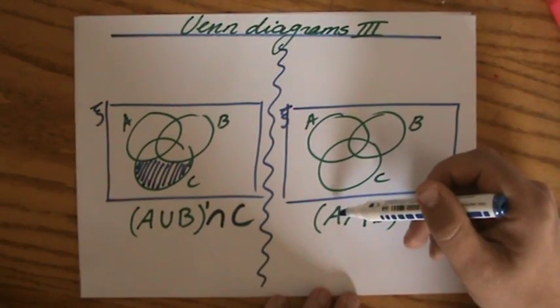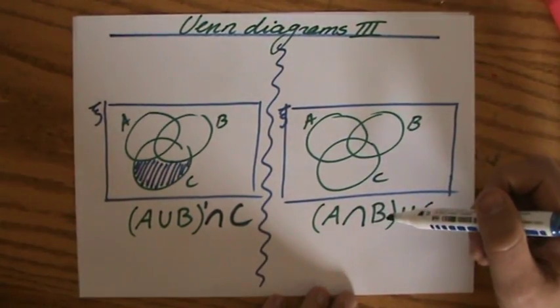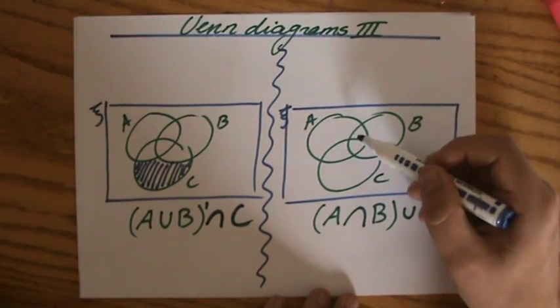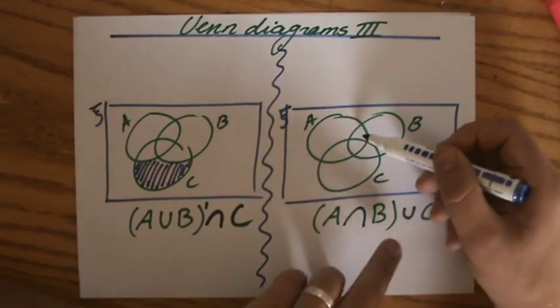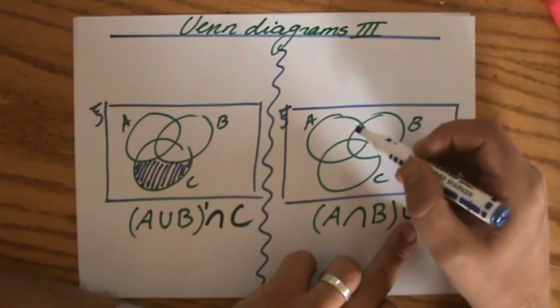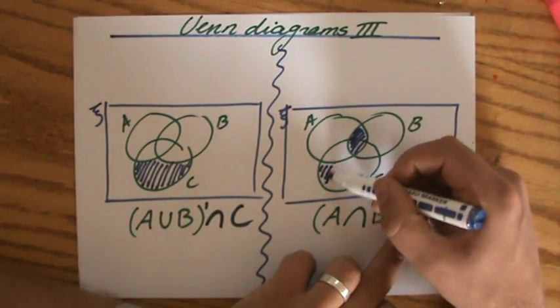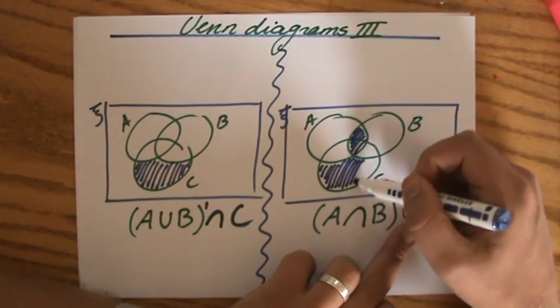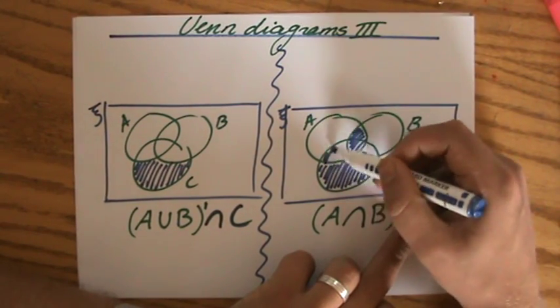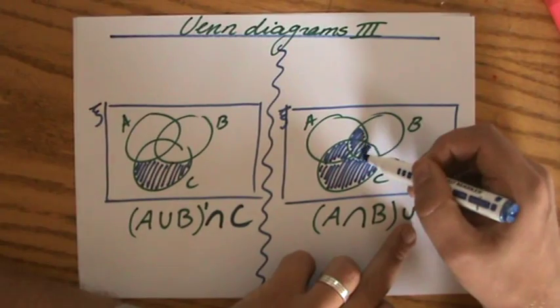They are saying the intersection of A and B. So it has to intersect with A and B. Yeah? Union C. So it can also be part of C, like that, and like that.